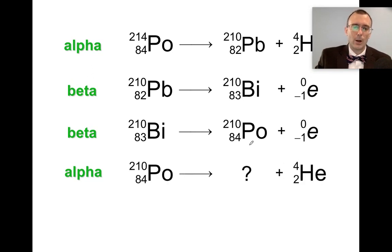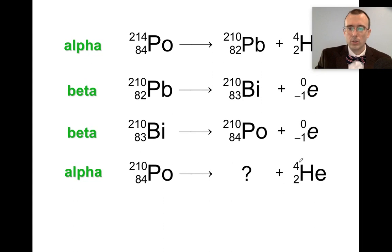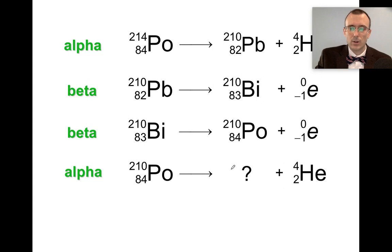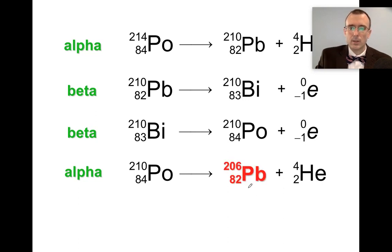Polonium-210 undergoes alpha decay — the final alpha particle. We ask: what plus 2 is 84? That's 82. And what plus 4 is 210? That's 206. So the product is element 82, mass number 206. Element 82 is lead, so the final stable nucleus is lead-206, Pb-206. Make sure you go through all four of these steps before arriving at that final answer.